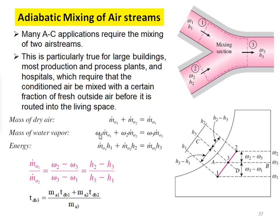For the adiabatic mixing arrangement, applying conservation of mass for dry air: ṁ_a1 + ṁ_a2 = ṁ_a3. For water vapor: ṁ_a1·ω₁ + ṁ_a2·ω₂ = ṁ_a3·ω₃. For energy: ṁ_a1·h₁ + ṁ_a2·h₂ = ṁ_a3·h₃. On the psychrometric chart, state point 1 is cold air, state point 2 is hot air, and state point 3 is the mixed result.